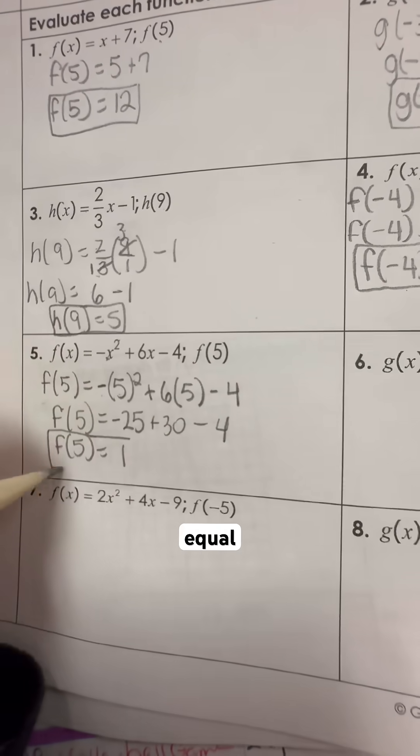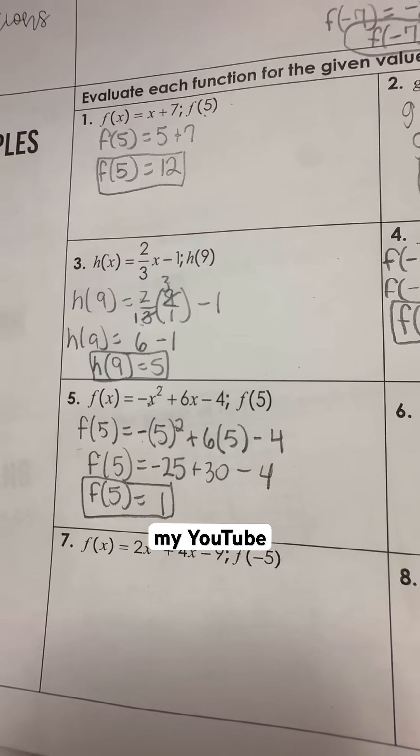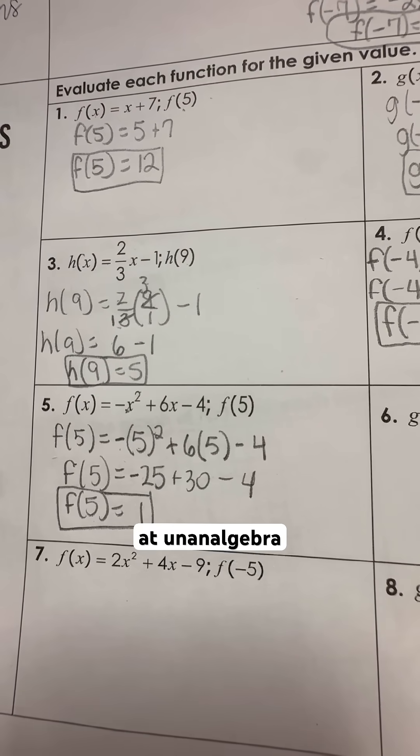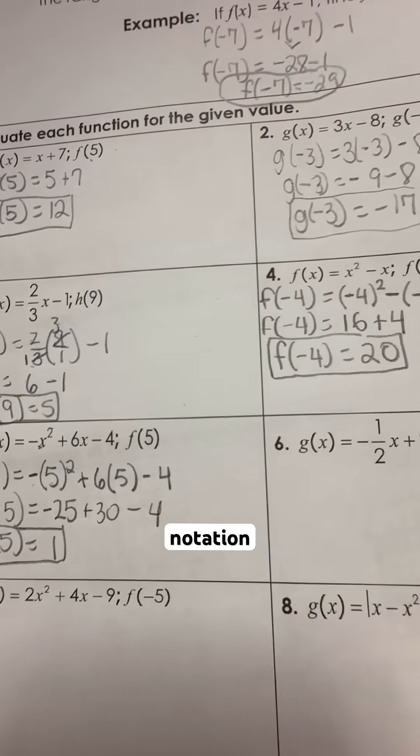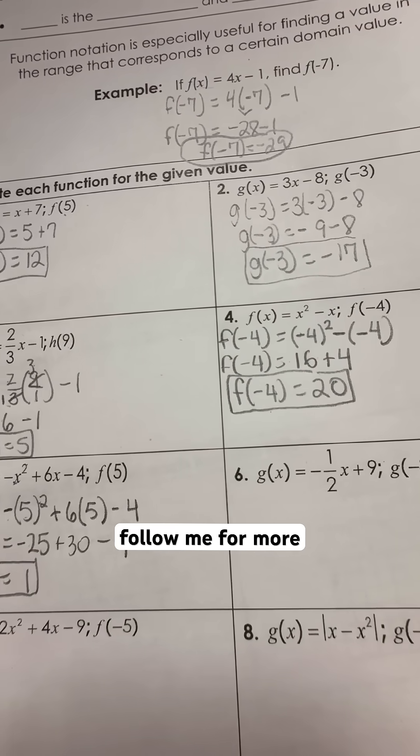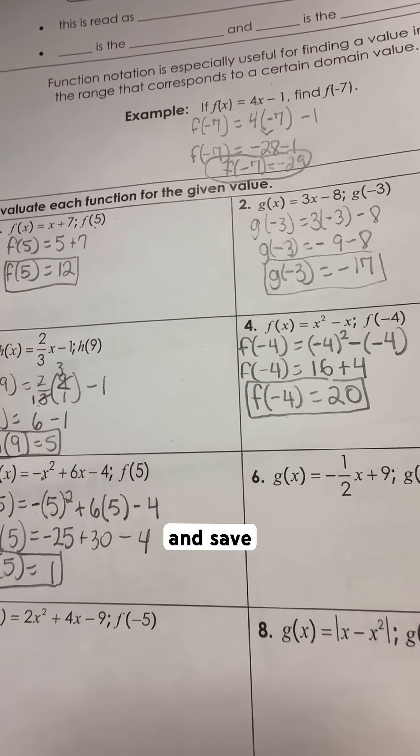5 minus 4 is 1, so my answer is f of 5 is equal to 1. And if you want more questions like these, find them on my YouTube, Instagram, and TikTok at unanalgerbra. All these are located in my function notation playlist. Don't forget to like, share, follow me for more. See you soon and save it for later.